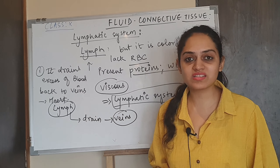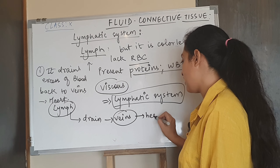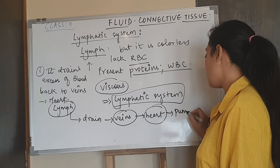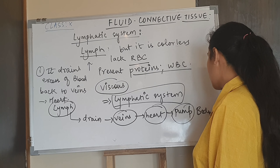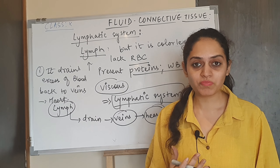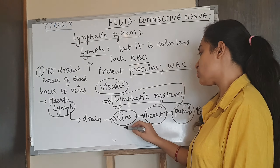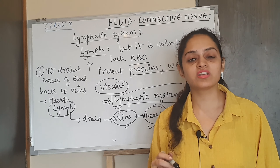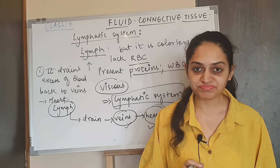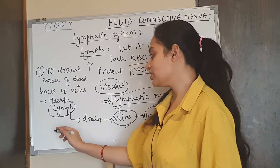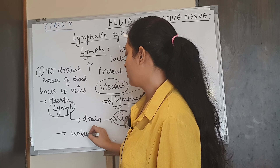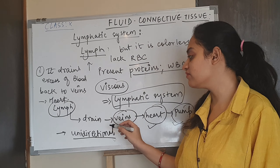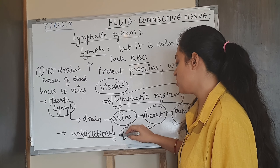The veins then give this blood to the heart, which pumps and circulates it throughout the whole body. Lymph cannot pump blood on its own, so the flow goes from lymph to veins to heart. This flow is unidirectional — there is no flow back from veins to lymph.